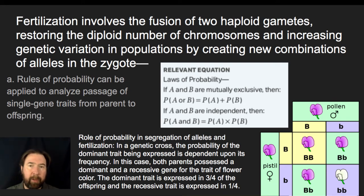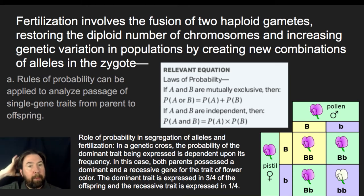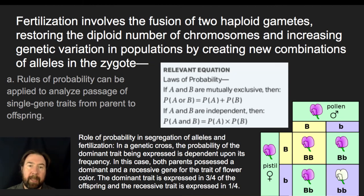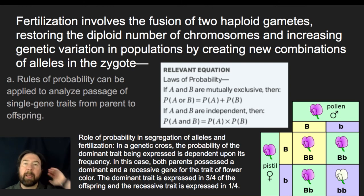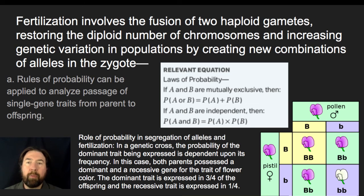The role of probability in segregation of alleles and fertilization in a genetic cross means that the probability of a dominant trait being expressed is dependent upon its frequency. Both parents possessing the dominant and recessive genes for flower color results in the dominant trait being expressed in three quarters of the offspring and the recessive in one quarter. The probability of each outcome taking place is the crucial mathematics in the law of probability.